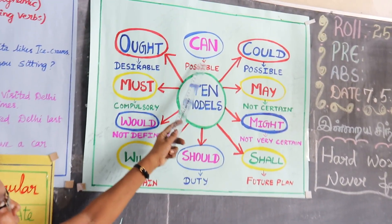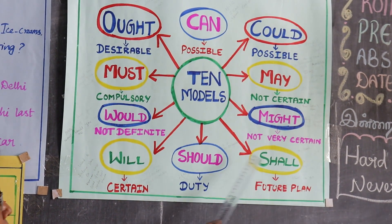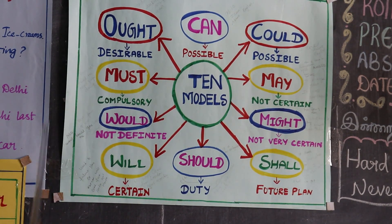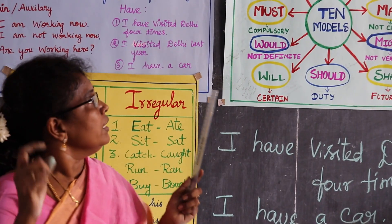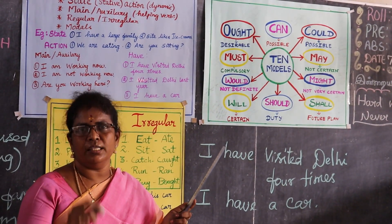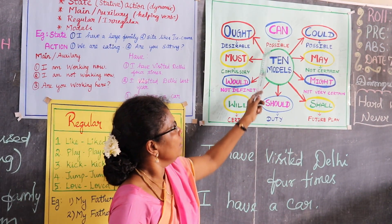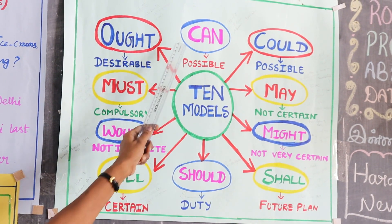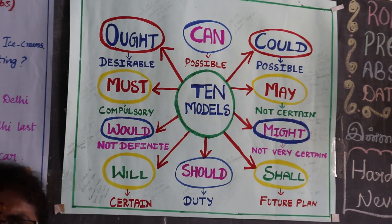The ten modals are: can, could, may, might, shall, should, will, would, must, ought. What is a modal? A modal is a verb used before another verb to express meaning — such as possibility, not certainty, necessity, or duty.